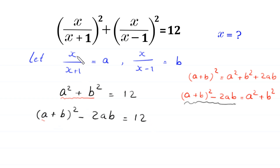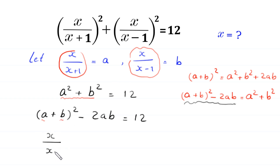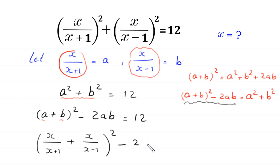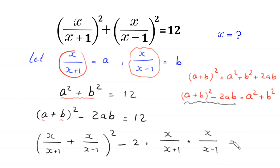Now we replace a with x over (x plus 1) and b with x over (x minus 1). Then this equation becomes: x over (x plus 1) plus x over (x minus 1), whole squared, minus 2 times x over (x plus 1) times x over (x minus 1), is equal to 12.